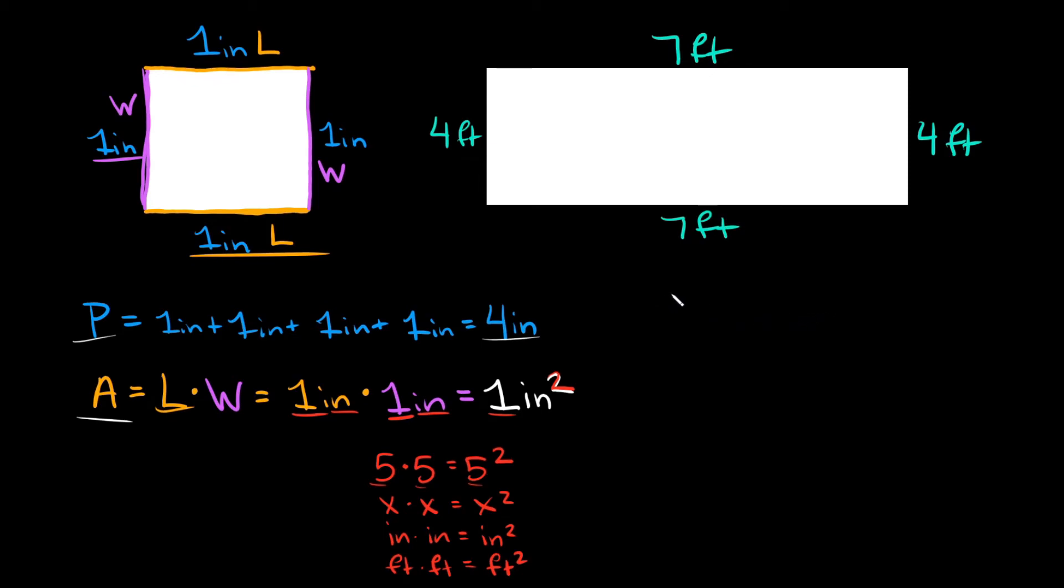So if you wanted to find the perimeter, remember perimeter is just adding all the sides up together. So we could say that the perimeter is equal to four plus seven plus four plus seven. So what does that equal? Well let's see, four plus seven is equal to 11. So 11 plus 11 is equal to 22.